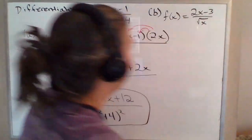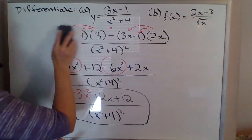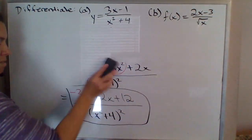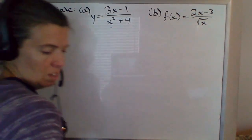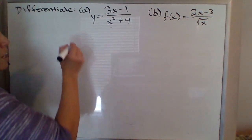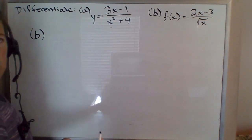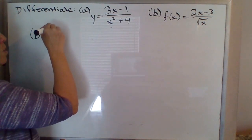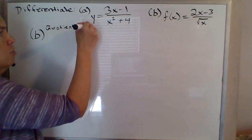Part b. There are actually a couple of different ways you could handle function b here. I might differentiate it two different ways just to show you that you get the same result either way, and you could think about which way seems simpler overall. First, I'm going to use the quotient rule on that function b.